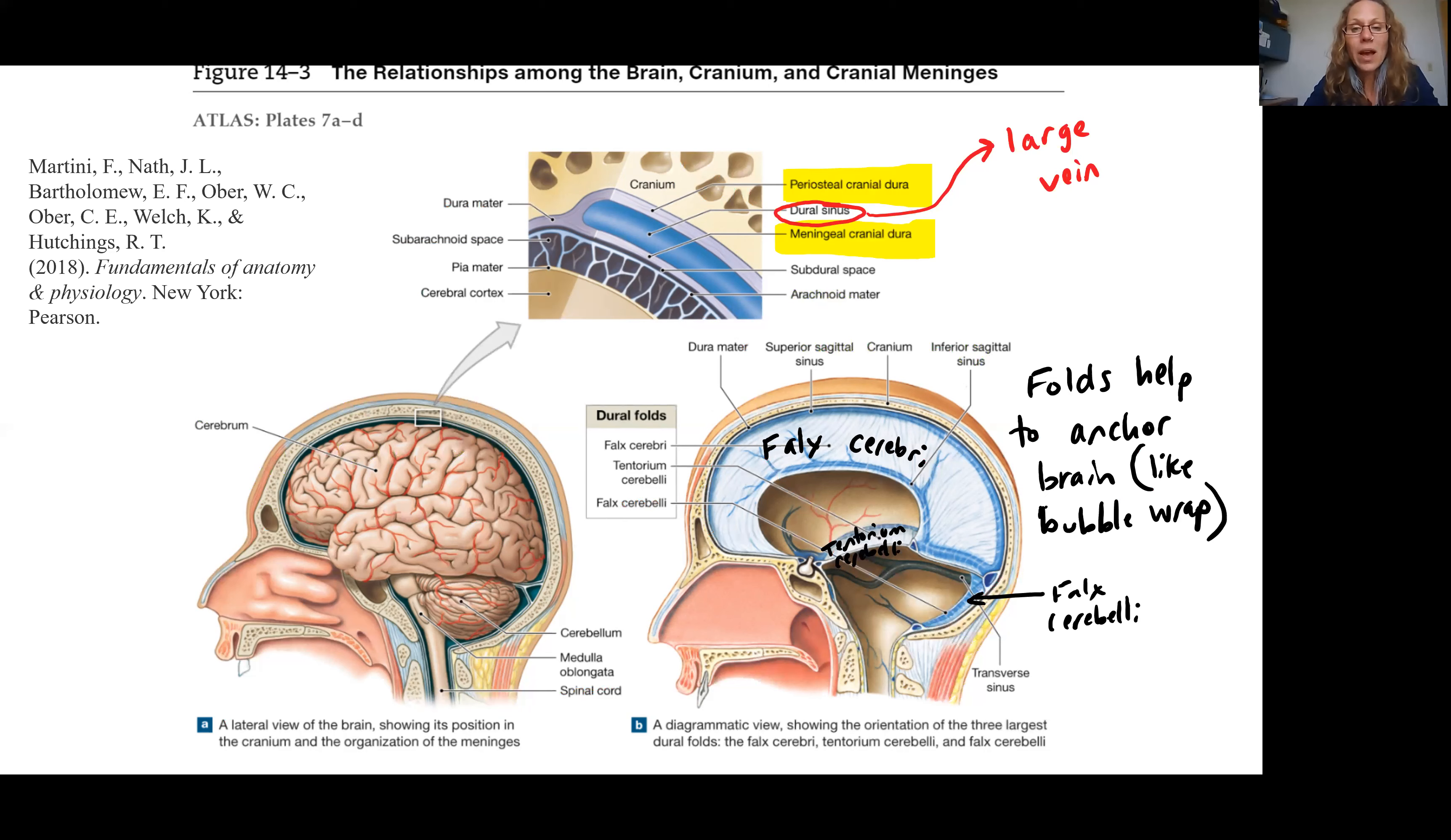Now these folds are essentially anchoring the brain in the cranial cavity without actually compromising the neural tissue. We don't have these folds actually connected and part of the brain. We're not losing any neural tissue, but we are seeing them hanging down and around the brain structures to help nuzzle them into place.